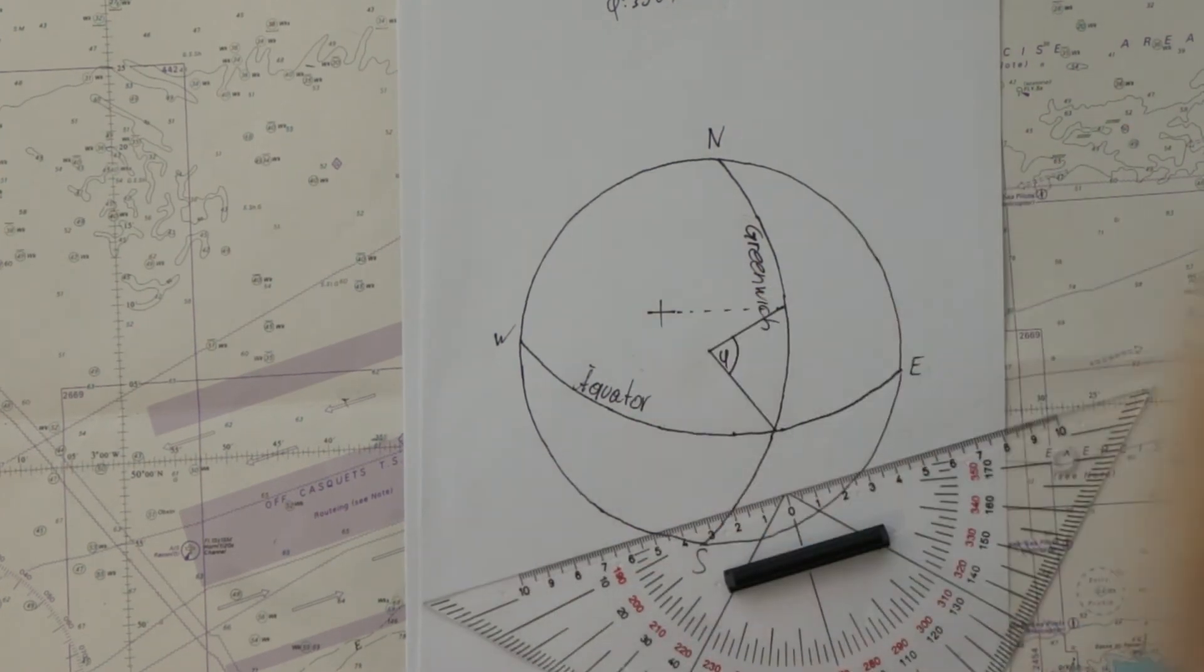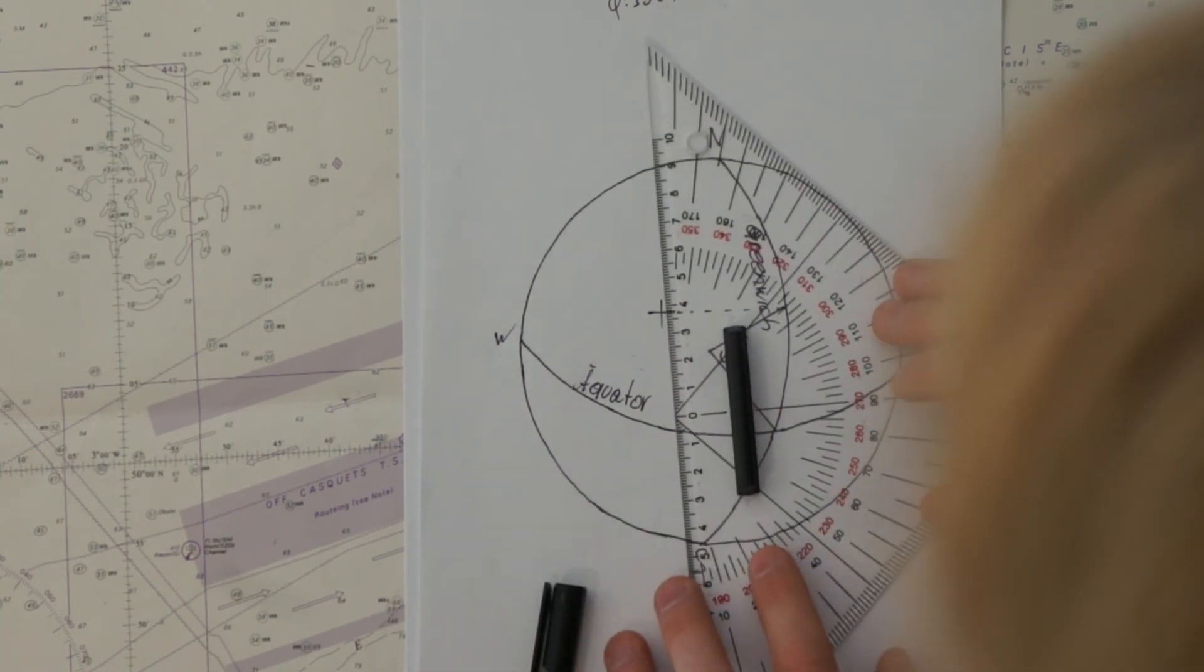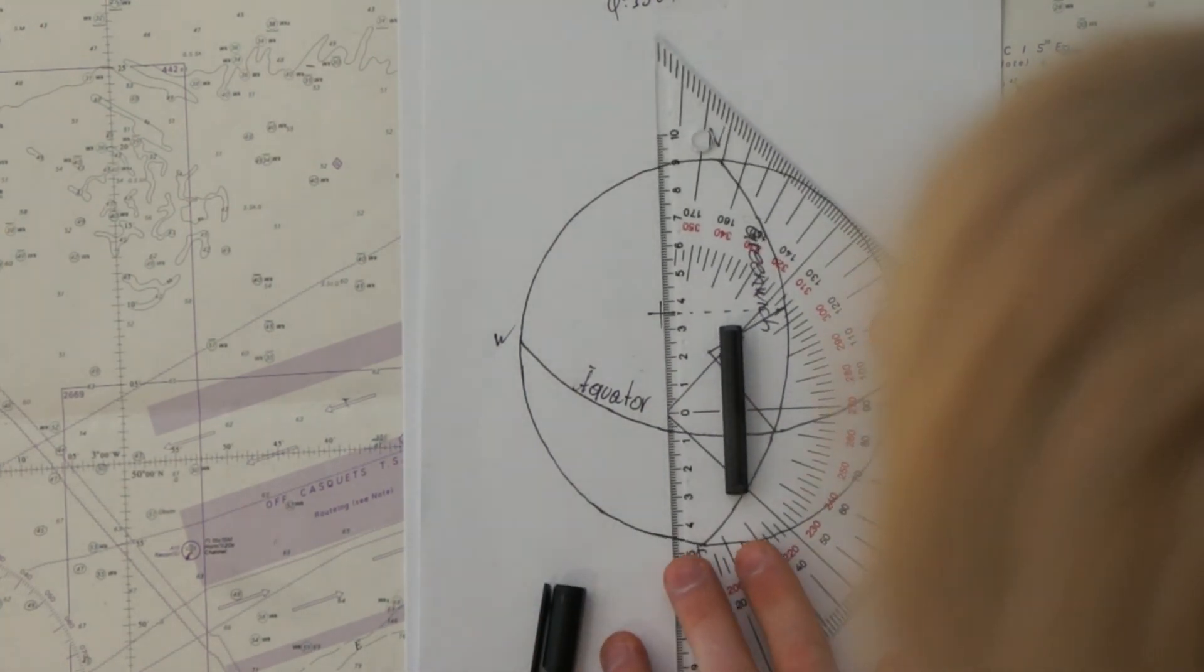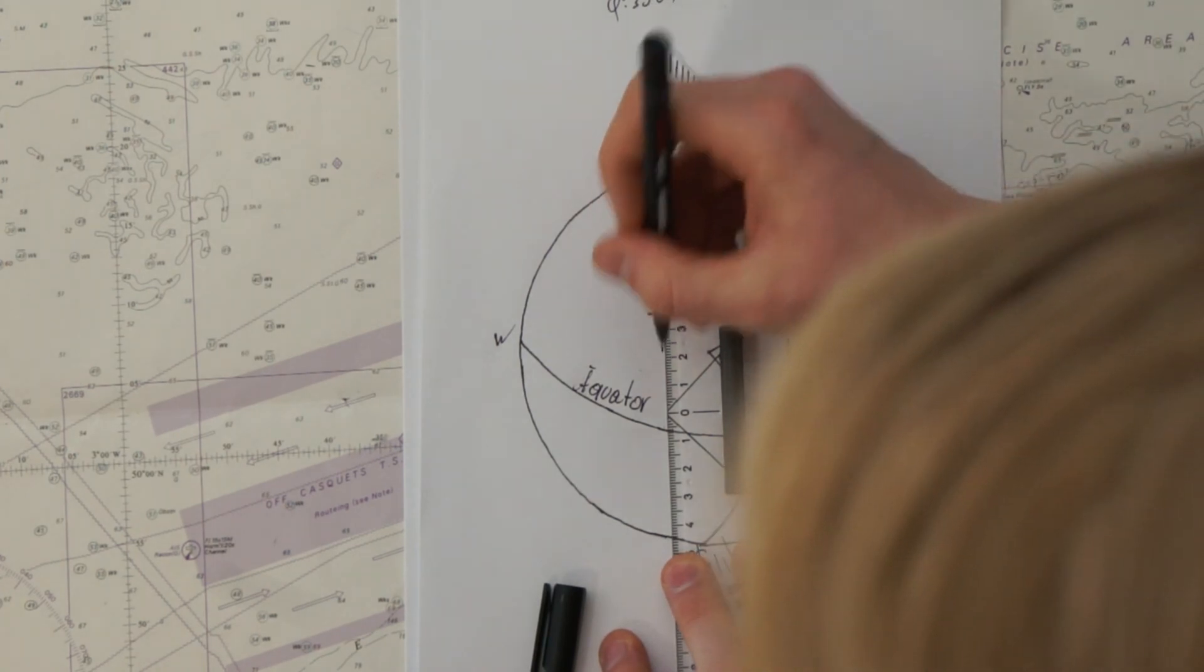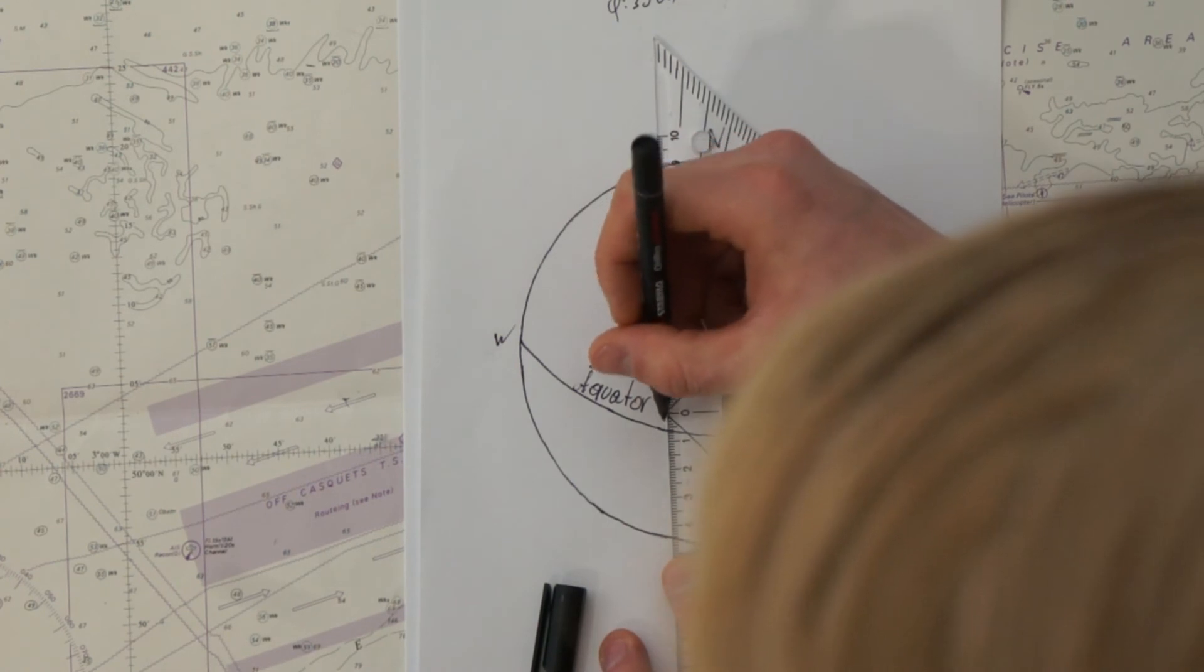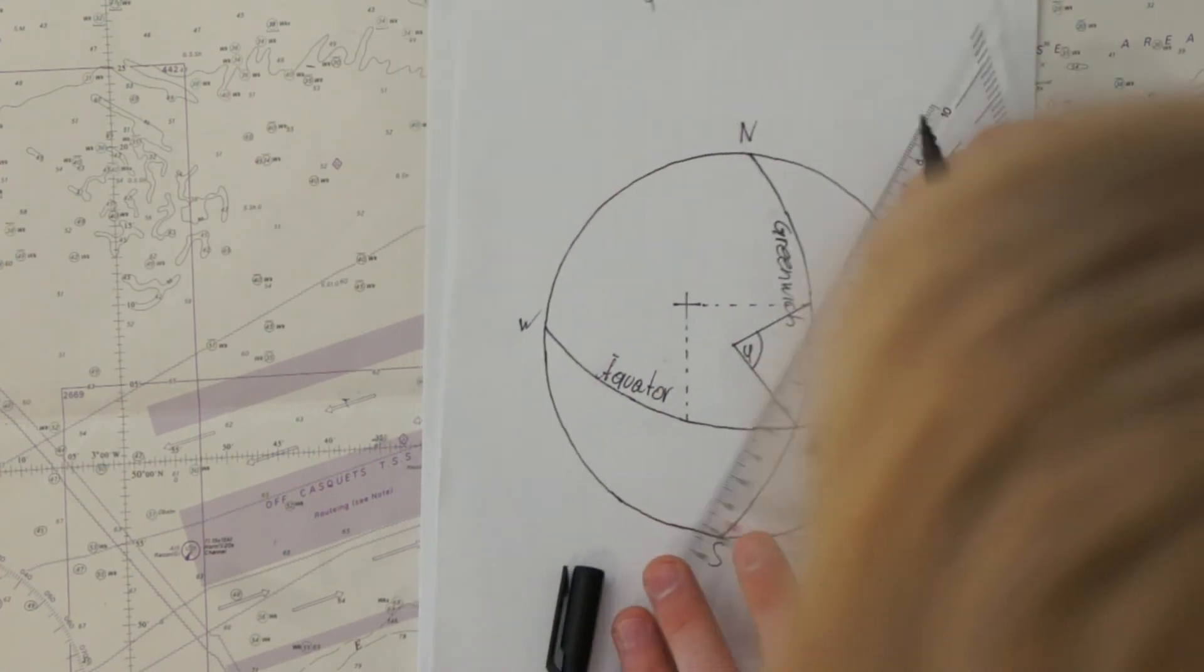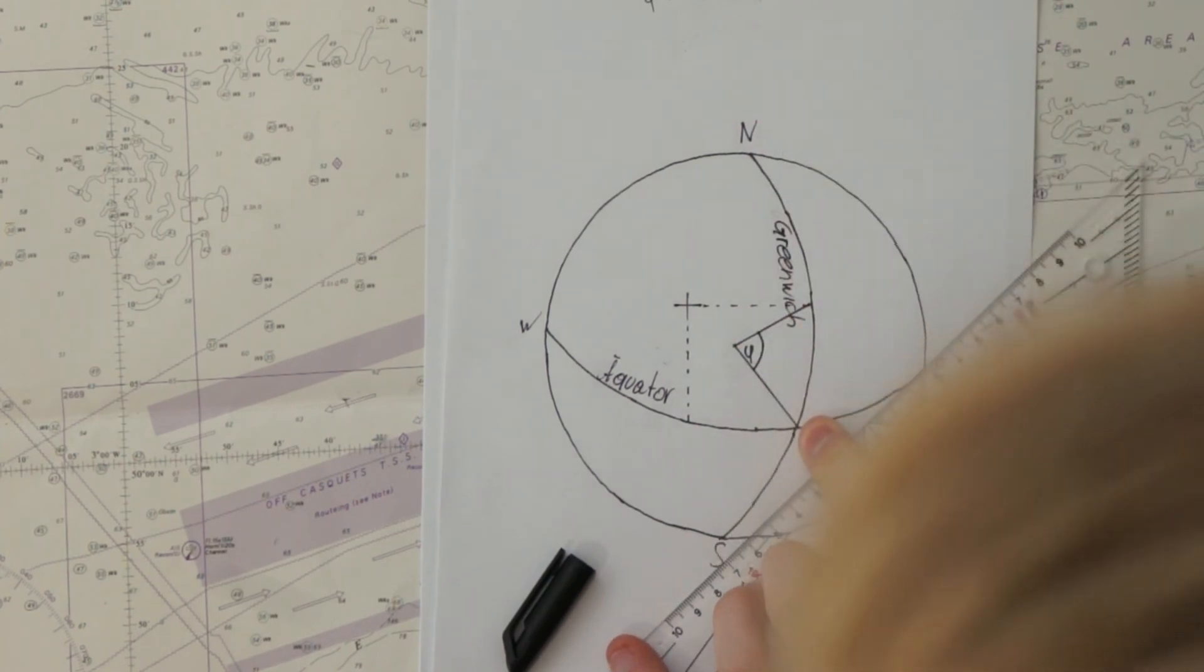Again, you plot your longitude to the next latitude circle. Here, the equator. And then, you draw an angle from the center to the earth. To your zero of longitude, which is the Greenwich meridian.